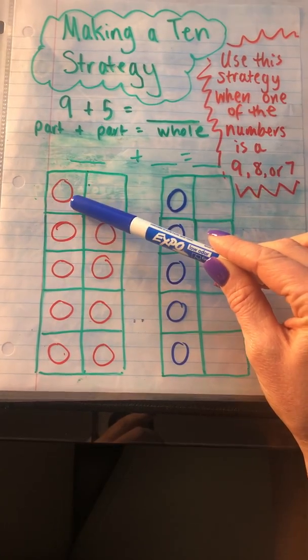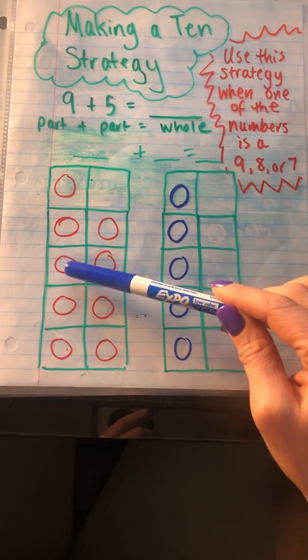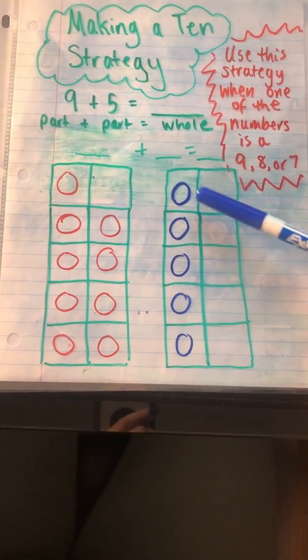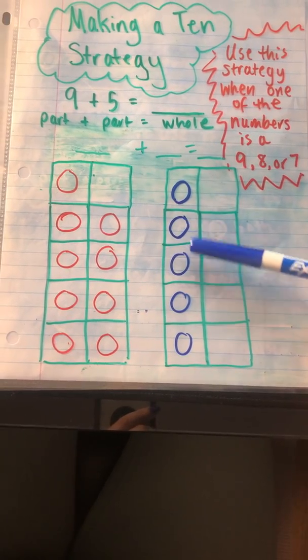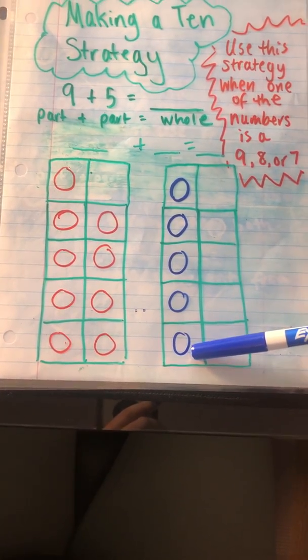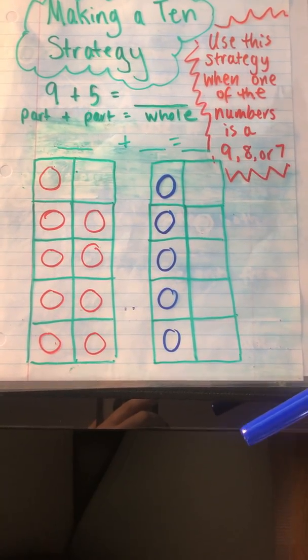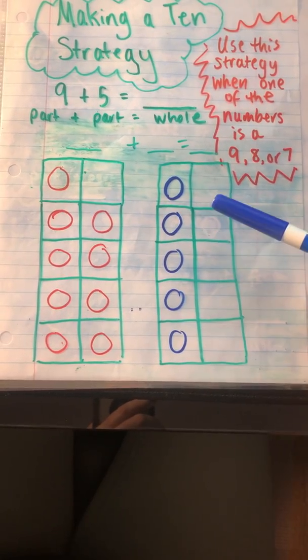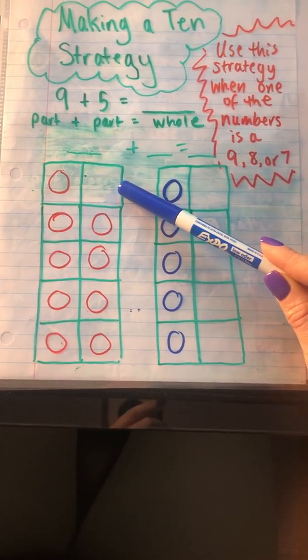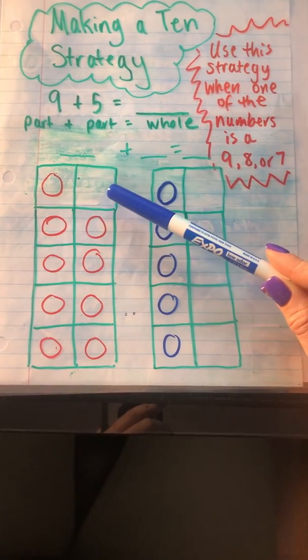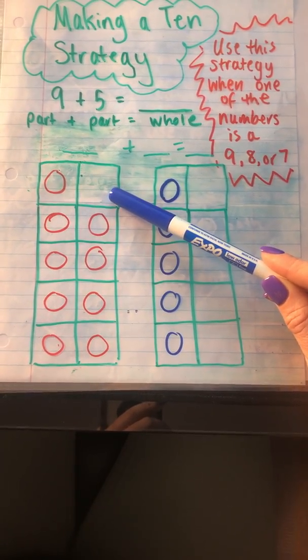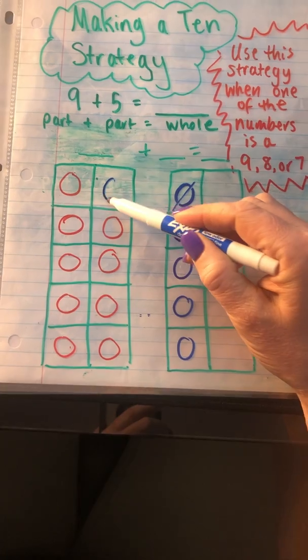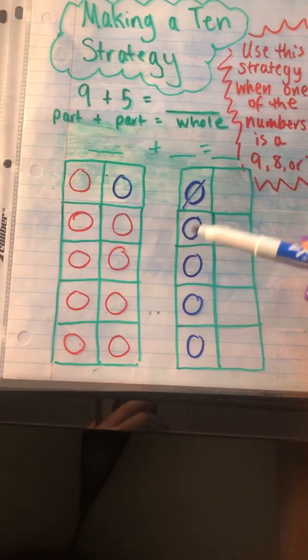I drew a 10 frame here on my paper. The first part I have nine counters: one, two, three, four, five, six, seven, eight, nine. Plus, in my second 10 frame I have five: one, two, three, four, five. Now I want to make a friendly 10, so if I want to make a friendly 10, I need to take one from this tens frame and add it over here. I can see very easily using the tens frame that I need just one more, so I'm going to borrow from this counter and then add it over here. So now I have 10.